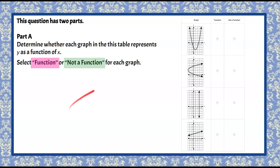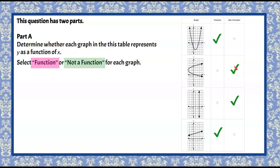Let's review our four graphs. This first one is a quadratic function and it is a function — the pencil never passed through more than one point at a time. The second was not a function because we passed through two points several times. A vertical line is not a function because it fails the vertical line test, and all other lines are functions. So: function, not a function, not a function, function.